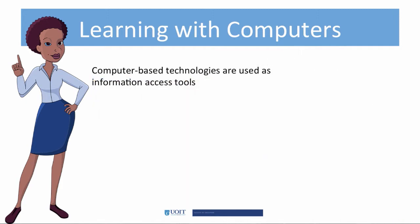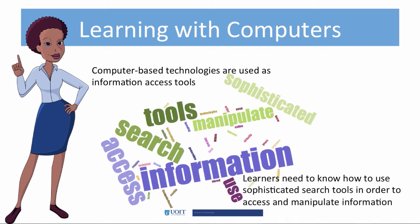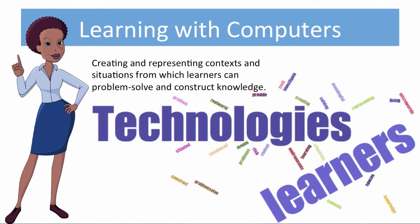Joninson goes on to say computer-based technologies are also used as information tools. Within a few years, virtually all technical information will be stored online. Literacy for the next generation will require knowing how to use and manipulate these tools to locate and access multiple forms of information. Internet search engines enable increasingly sophisticated search strategies. Learners need to know how to use sophisticated search tools in order to access and manipulate information. Using technologies as context means creating and representing contexts and situations from which learners can problem-solve and construct knowledge. Technologies such as case-based learning environments and micro-worlds seek to provide rich and situated problem spaces for learners to investigate while solving meaningful, real-world problems.